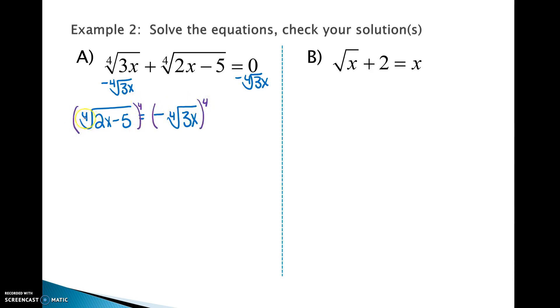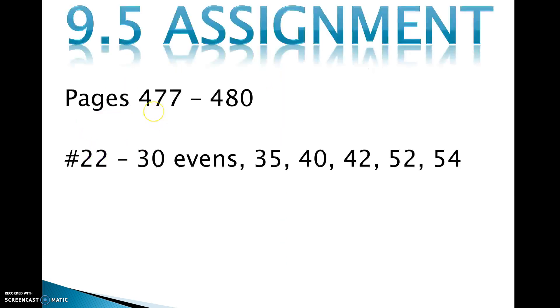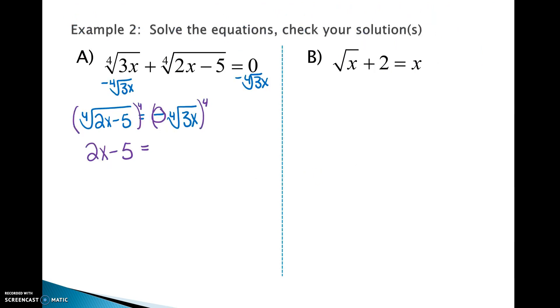On the left, the fourth root and the exponent of 4 cancel, so we have 2x minus 5. On the right, this negative is being multiplied four times. That's an even number of negatives, so it cancels. Fourth root of 3x to the fourth, that simply becomes 3x. Finish solving by subtracting 2x on both sides, so negative 5 equals x.